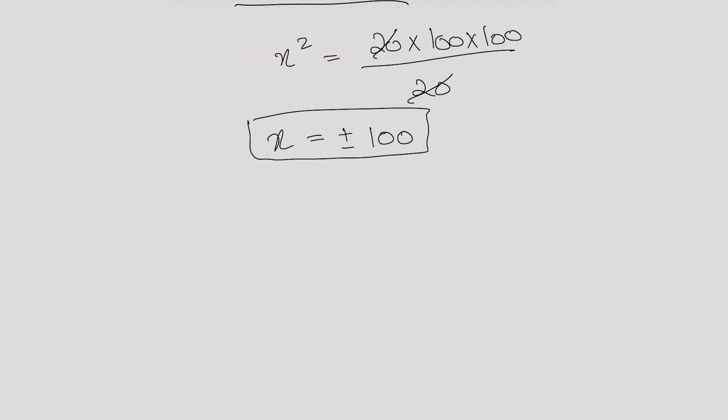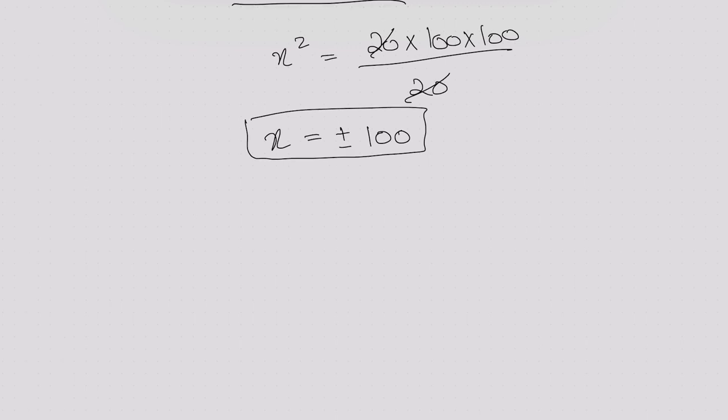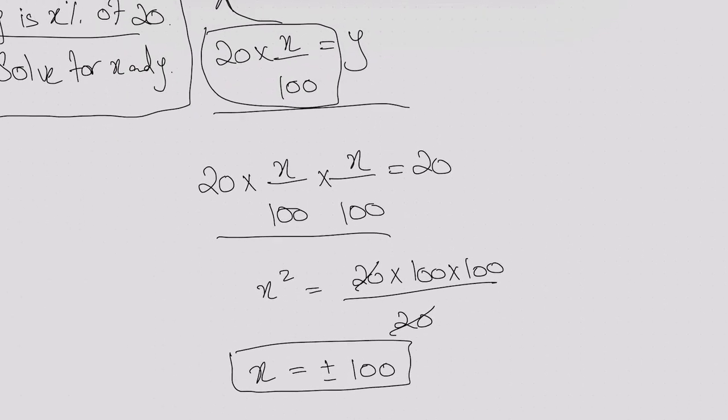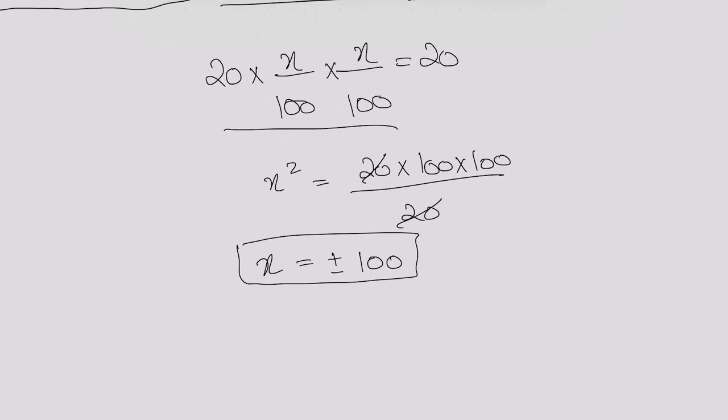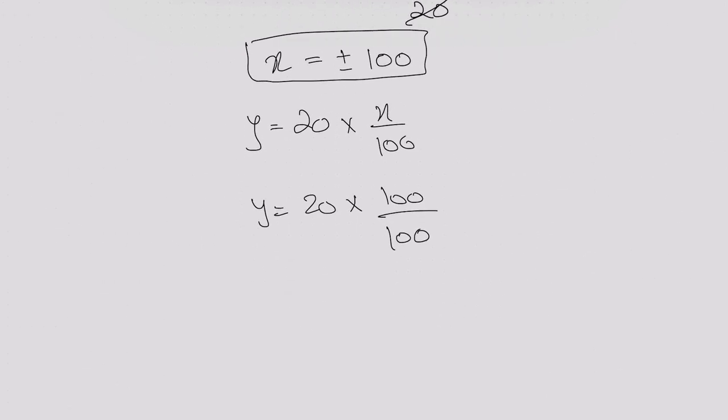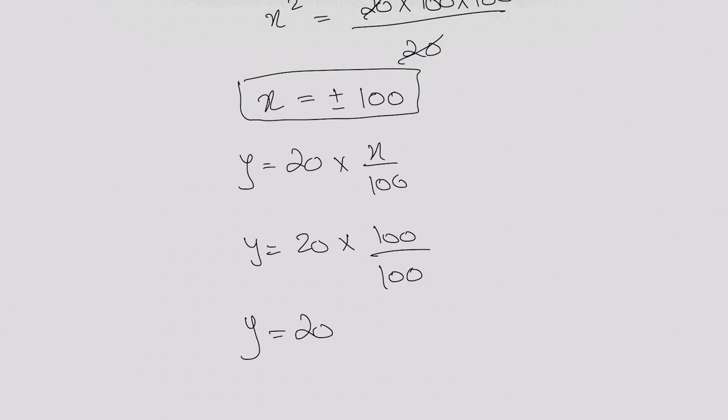Now using x plus 100, I have this equation. I will utilize this to find the value of y. So y equals 20 multiplied by x over 100. Using the positive value of x, I will get y equals 20 multiplied by 100 over 100, which means y equals 20.